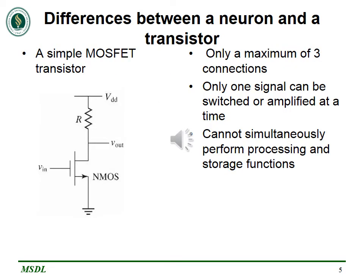For us to fully mimic the human brain, we have to know the difference between a neuron and a transistor, because the neuron is the fundamental unit of the human brain, just like how the transistor is the fundamental unit of basic electronic devices. Looking at the image at the left-hand side of this slide, we see a simple MOSFET transistor. One thing we notice is that it only has a maximum of three connections: the input voltage, the output voltage, and the power supply.